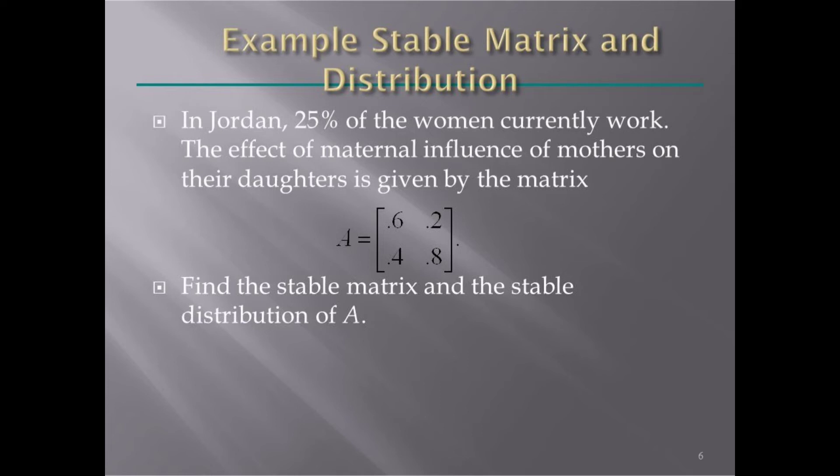Here's an example of stable matrix and distribution. In Jordan, 25% of women currently work. The effect of maternal influence of mothers on their daughters is given by the matrix A: [0.6, 0.2; 0.4, 0.8]. Find the stable matrix and stable distribution of A.